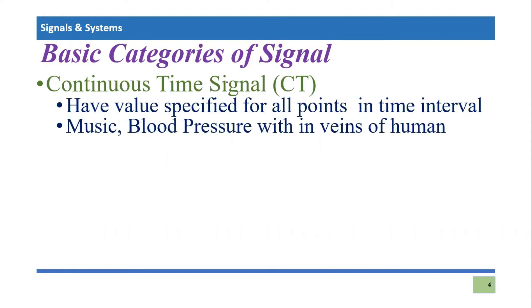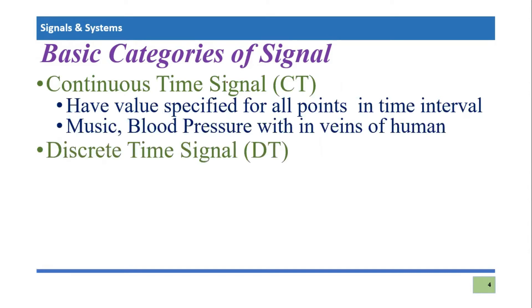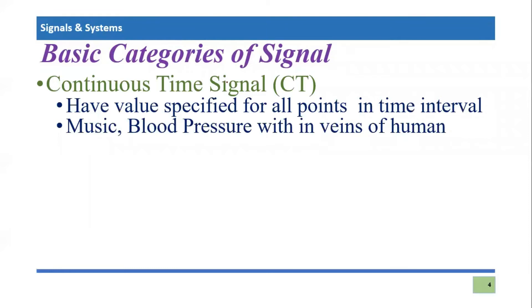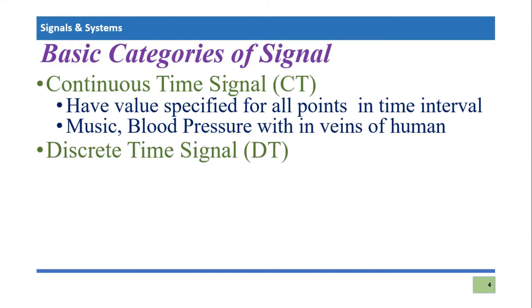Another example is blood pressure — the pressure of blood flowing through the veins of a human being — because it will also be continuous. It won't be something that exists only at one instant. There will be pressure present every time. This is the kind of continuous signal present in the form of physical phenomena, and a signal actually highlights a physical phenomenon.